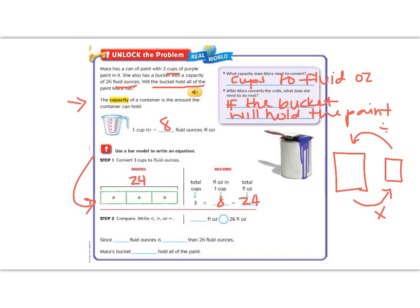Now let's do our step of comparing. It says that her bucket will hold 26 fluid ounces, and she only has 24 fluid ounces. So her bucket is larger than the amount of paint she has. So that means that her bucket will hold the paint.